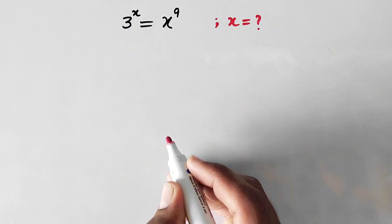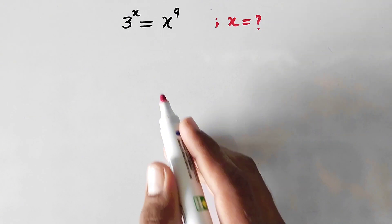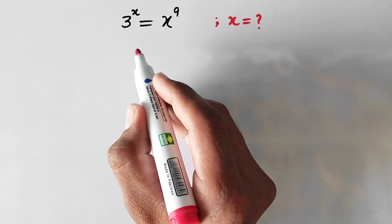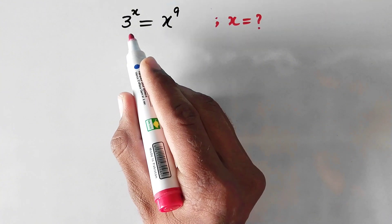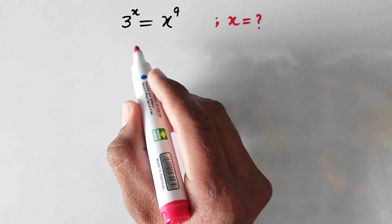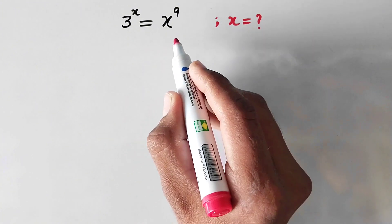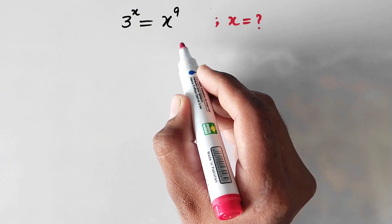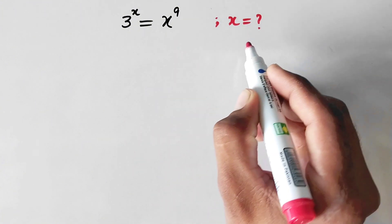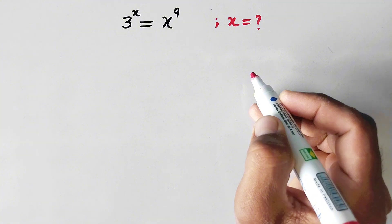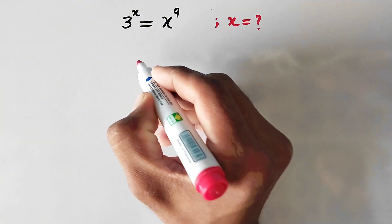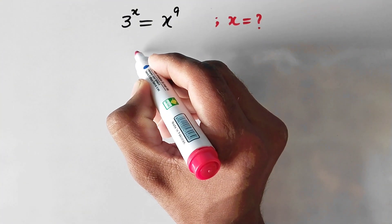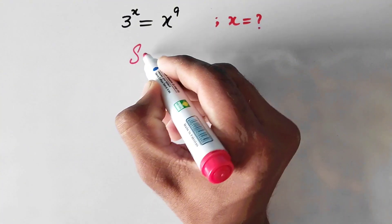Hello everyone and welcome to Explore Maths. In this video we are going to solve 3 to the power x equals x to the power 9 for the value of x. Here is its solution.